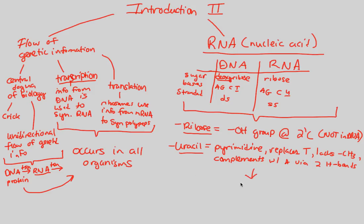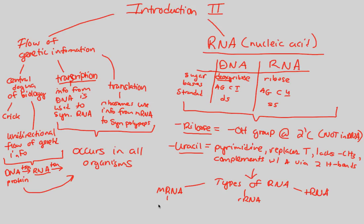We can now look at the types of RNA based on this background knowledge. The types of RNA we'll go over are, most importantly, mRNA. What is mRNA? mRNA — messenger RNA — encodes an entire protein. DNA provides a blueprint to make RNA through the transcription process, and that will eventually encode an entire protein.